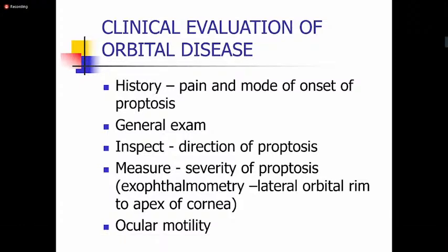Most patients with orbital disease will present with proptosis. The most important thing is to take a good history, especially regarding whether there is pain, and also the mode of onset of the proptosis — whether it was gradual or rapid — because this will guide you as to what you could most likely be dealing with.